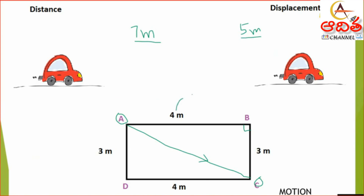Suppose the car takes 4 seconds to travel AB, 6 seconds for BC, and 5 seconds for CD — it is a rough estimate. So the time taken to cover the path A to C would be 6 plus 4, that is 10 seconds. Similarly, for the displacement from A to C, the total time taken remains the same — also 10 seconds.